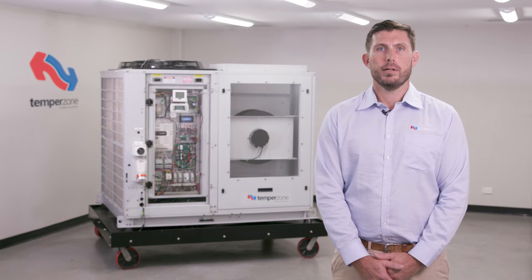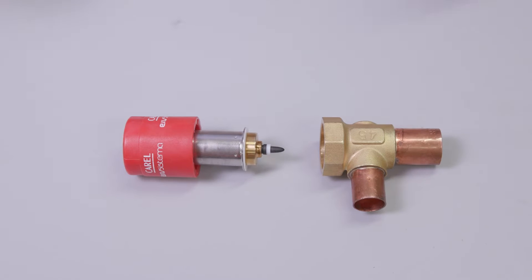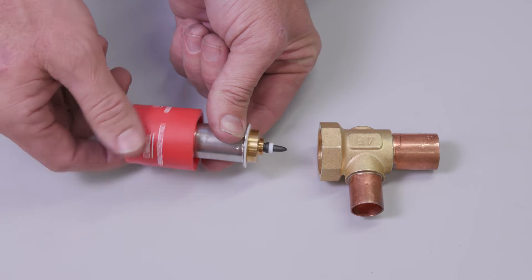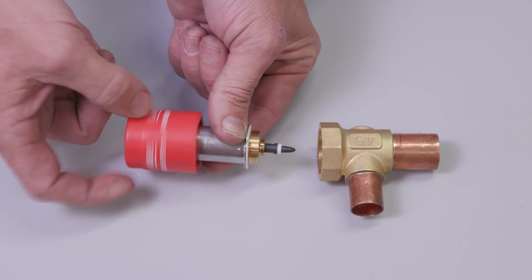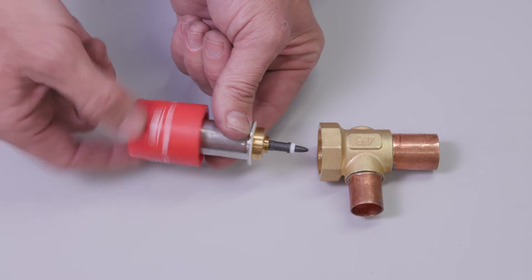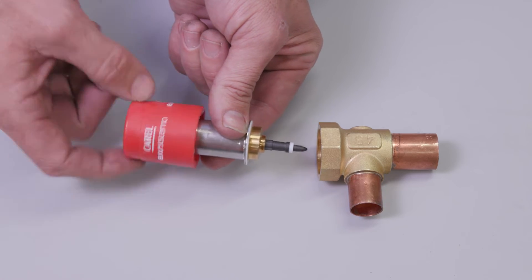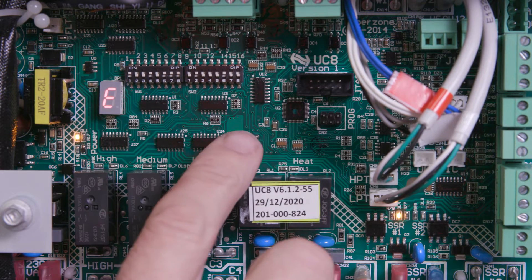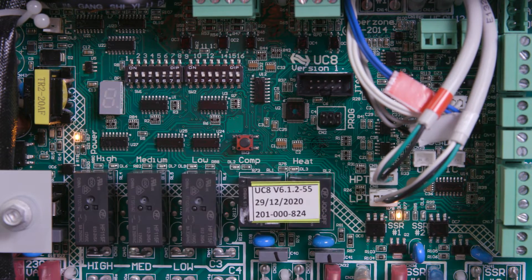An EEV operates a motor instead of an electromagnetic coil. The pulsations of the motor windings turn the valve spindle up and down a thread, allowing for modulated control of the valve, referred to as valve steps and displayed as a percentage open on the UC8 printed circuit board or Wi-Fi service utility tool.